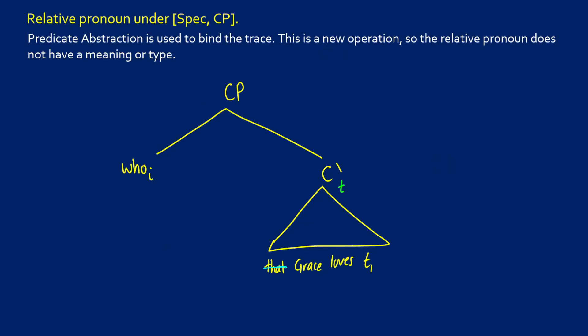Now, as soon as we get to the CP, this is where our WH pronoun is going to have an interesting effect. So when we say "who Grace loves," we do expect here to get an ET.